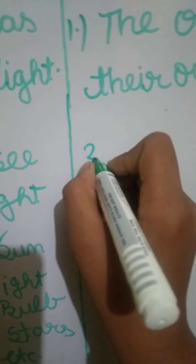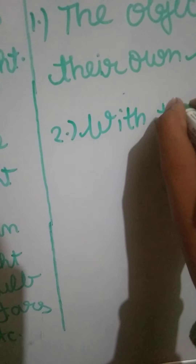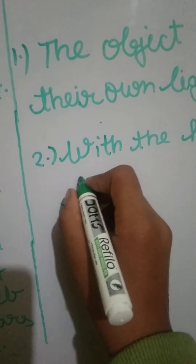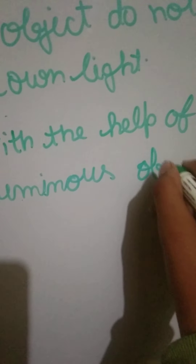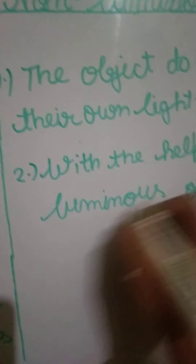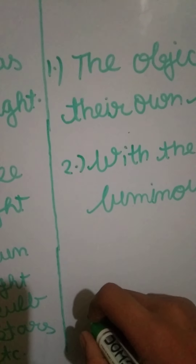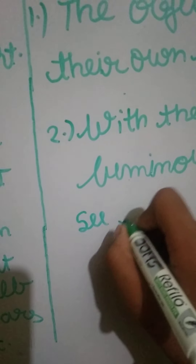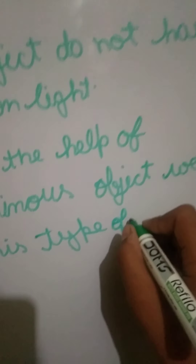For the second point about non-luminous objects: with the help of a luminous object, we can see this type of object — non-luminous objects can only be seen using reflected light from a luminous source.